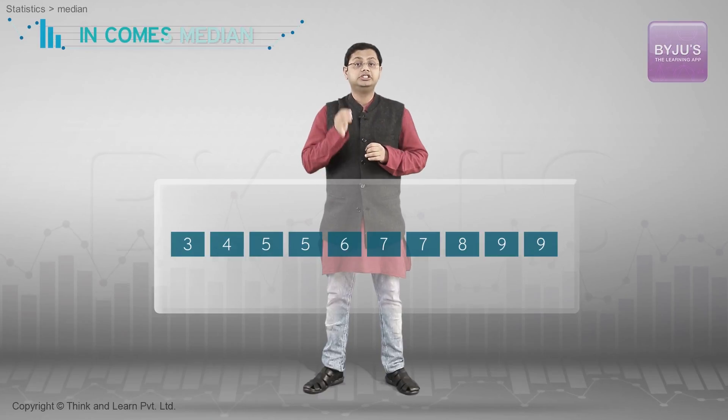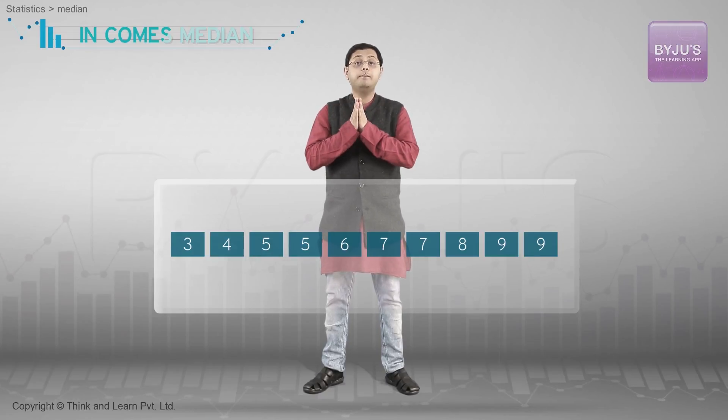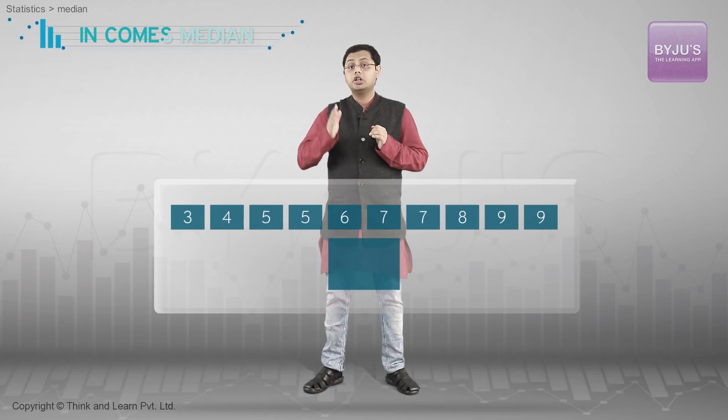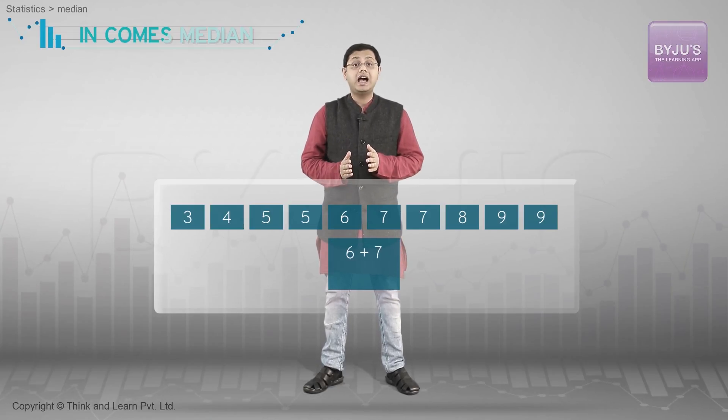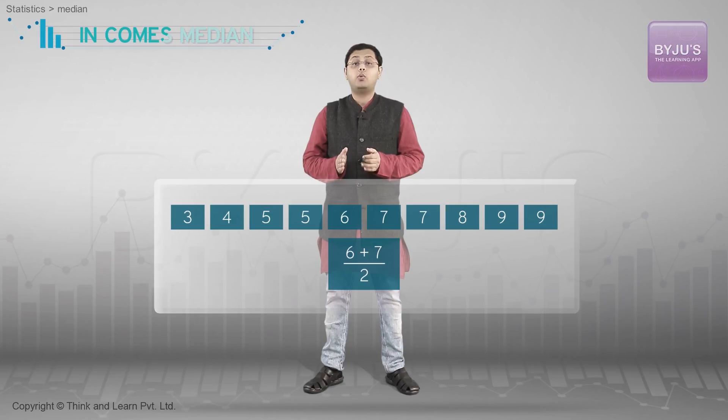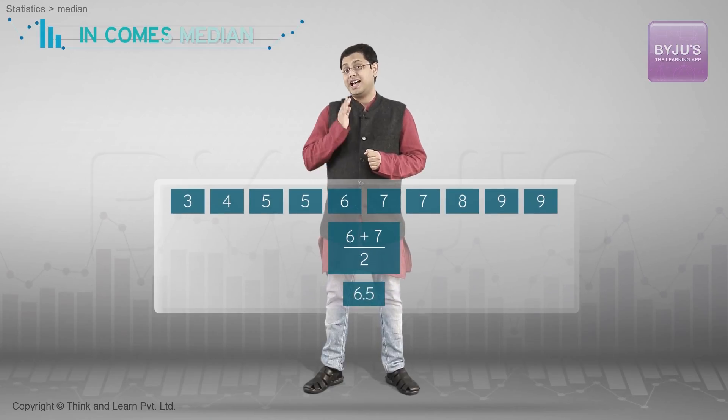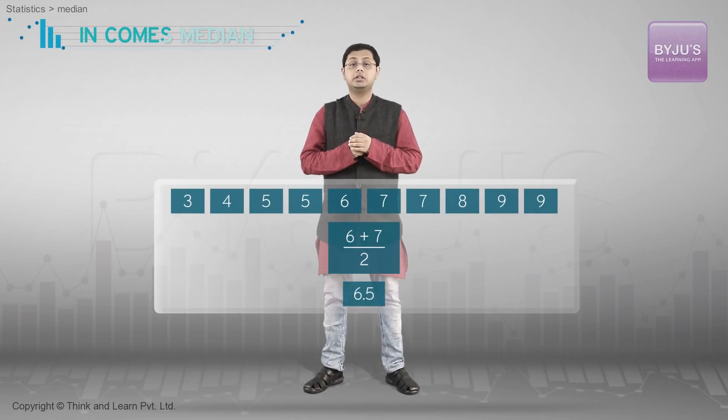We know the median should be a value which is exactly halfway along. So what do we do? If you have an even set of numbers, just take the mean of the middle two numbers — that is, add them together and divide by two. Here, you add the fifth and sixth terms, which are six and seven, and divide by two to get 6.5, and that is your median.